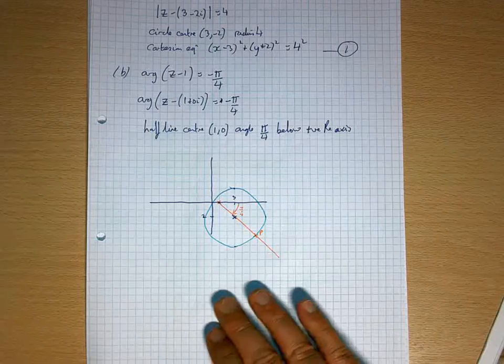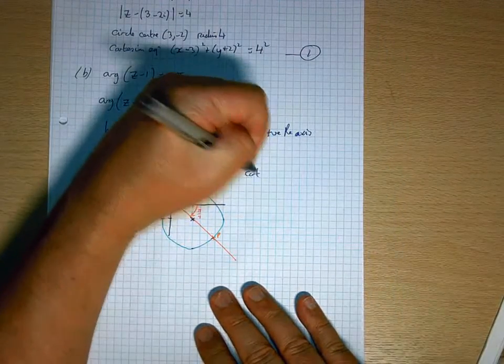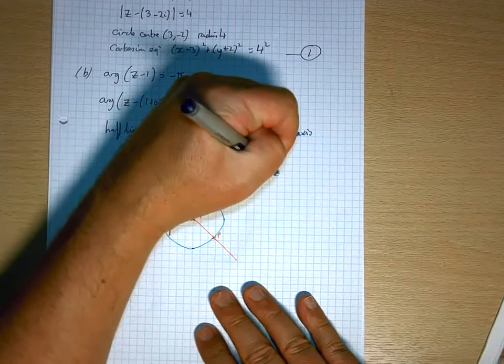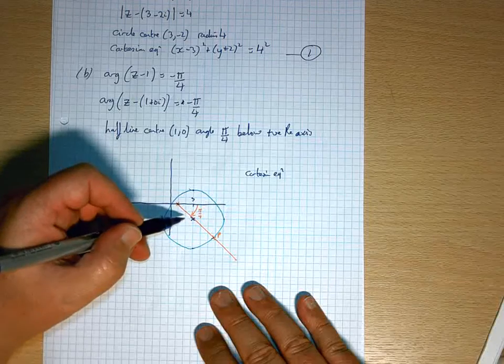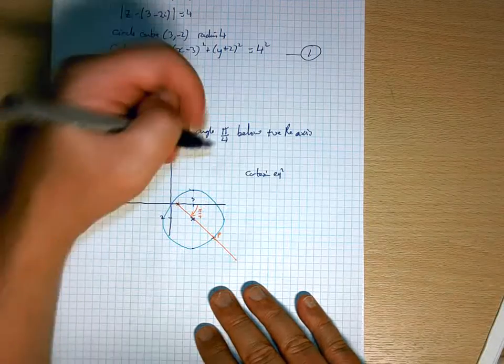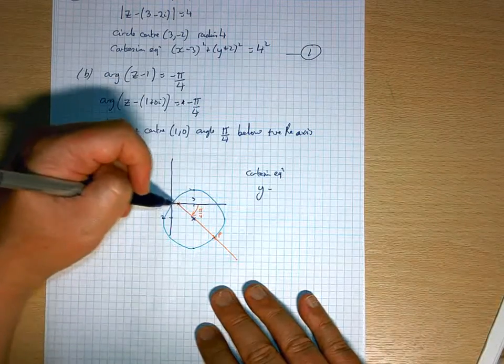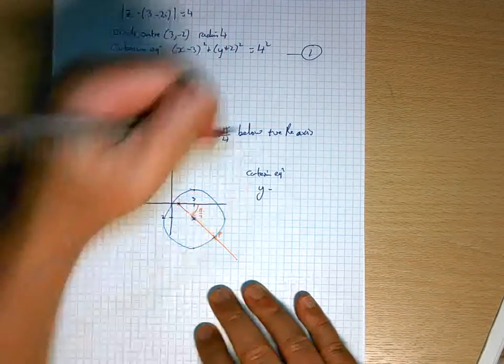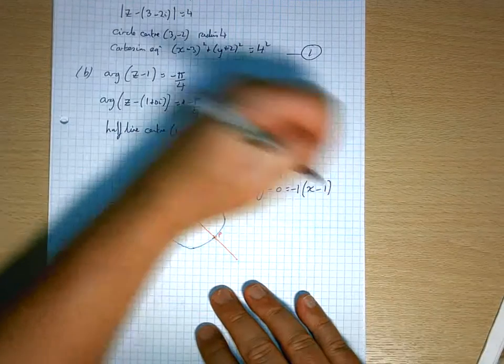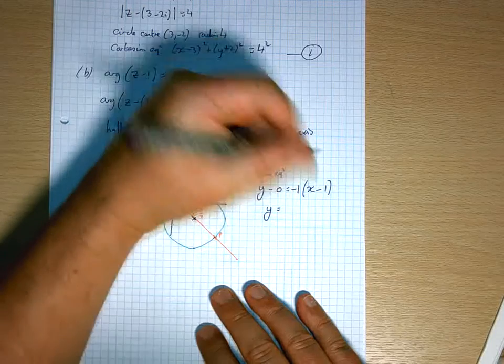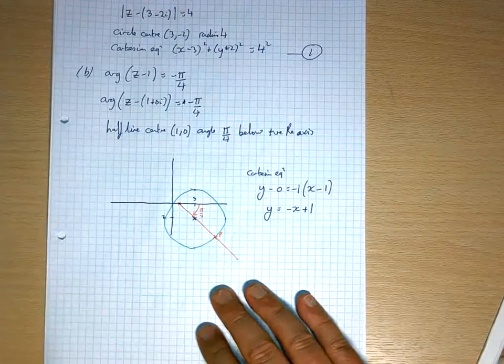Right, the Cartesian equation. Well, the gradient is going to be minus 1, because it's 45 degrees in the other direction. So it's going to be y minus, and I know that it's going through this point here, which has got a y of 0.